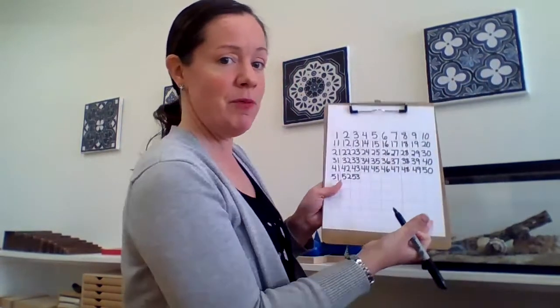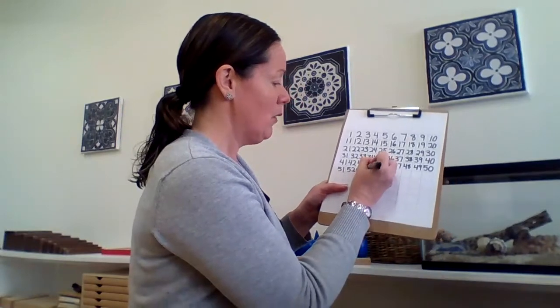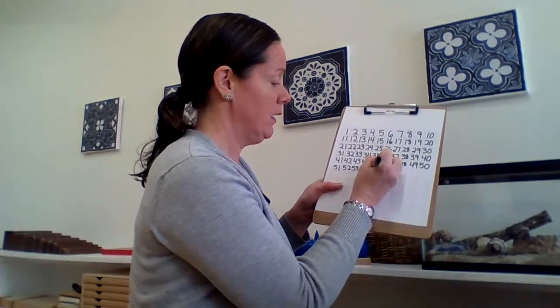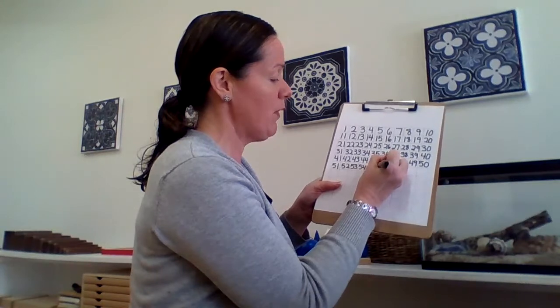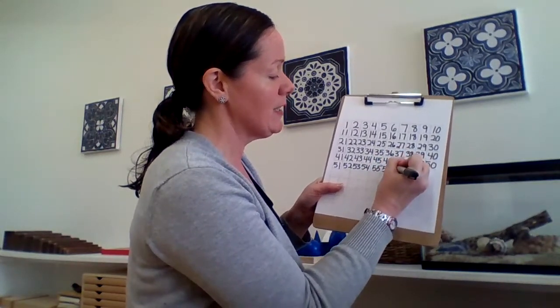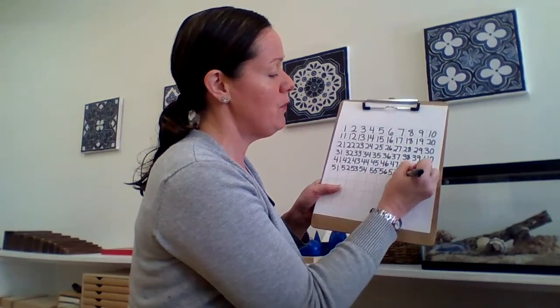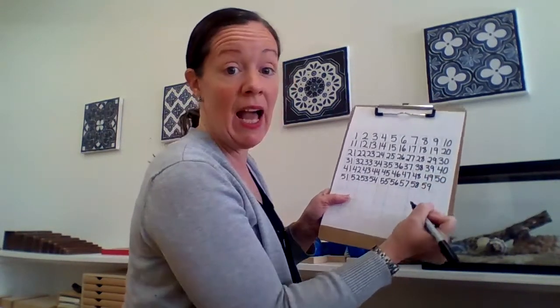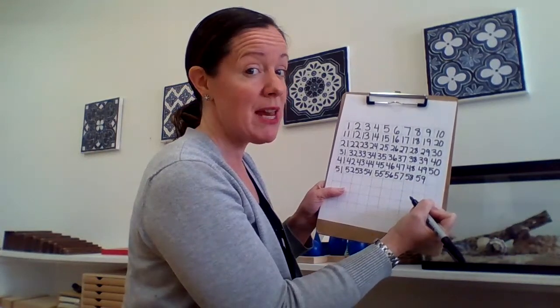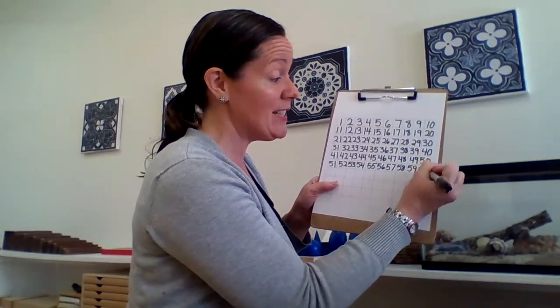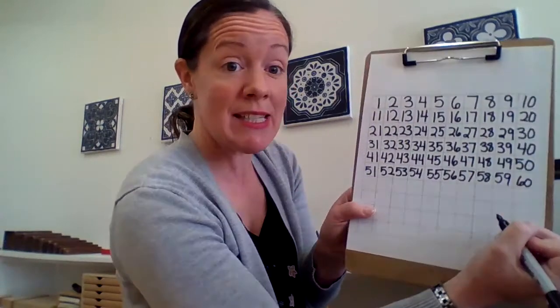What do you think comes after 50? In our next row? 51, 52, 53. See how I'm filling them in? 54, 55, 56, 57, 58, 59. What comes next? Six tens. 60. That's right. Six tens.